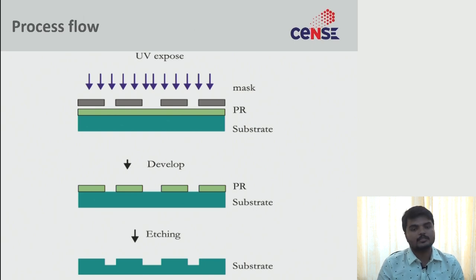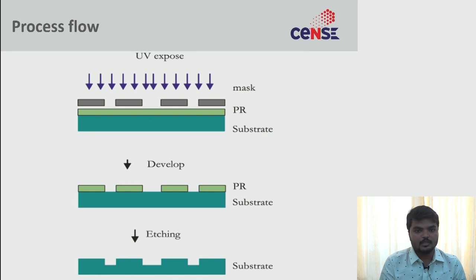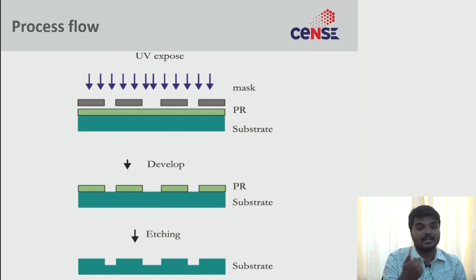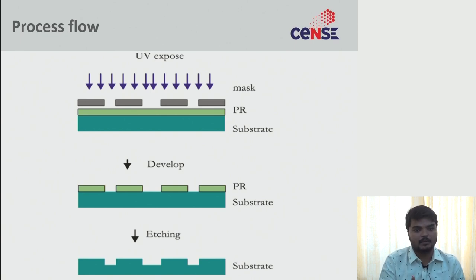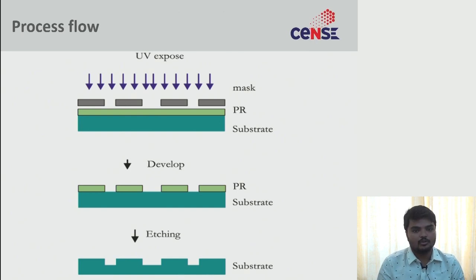Here's a process flow example. The green layer is the substrate — silicon. The PR, or photoresist, resists photons — light energy. We coat the photoresist, mask it, and transfer the design from the photomask to the photoresist by exposing it to UV. Lithography tools and exposure details will be covered in the lithography session.